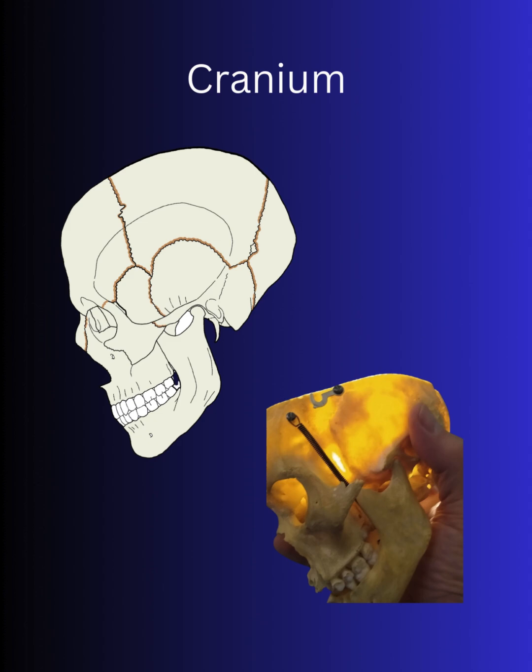Cranial bones are thinner and more flexible than most people realize. This allows them to flex as fluid pressure shifts, much like your ribs flex as you breathe. As you can see from this actual cranium, they're thin enough to be translucent in places. Sutures and craniosacral membranes help balance the shifting architecture.